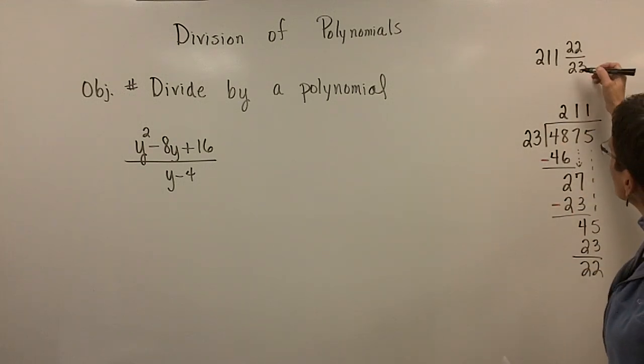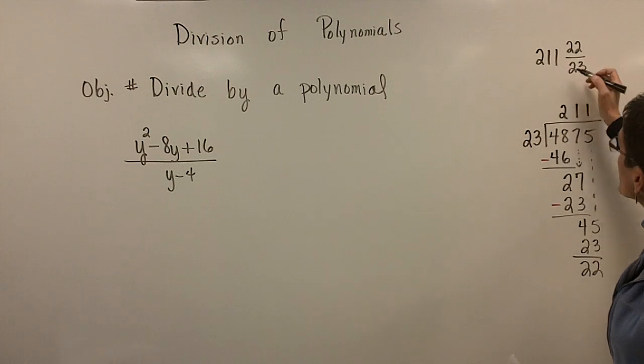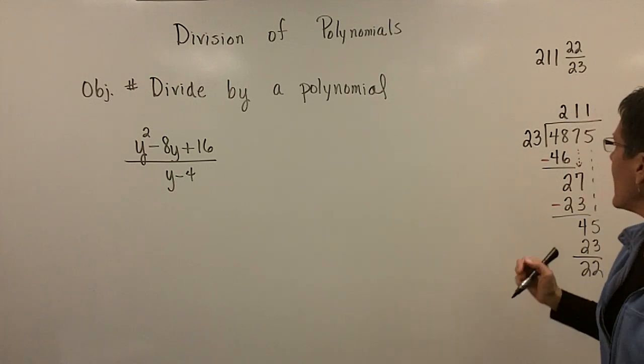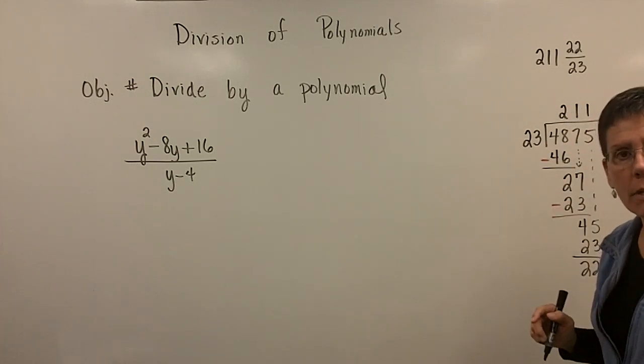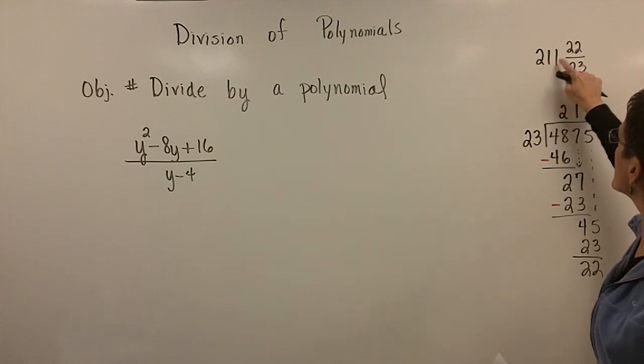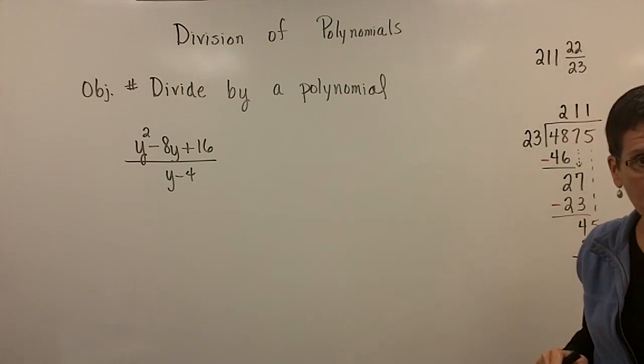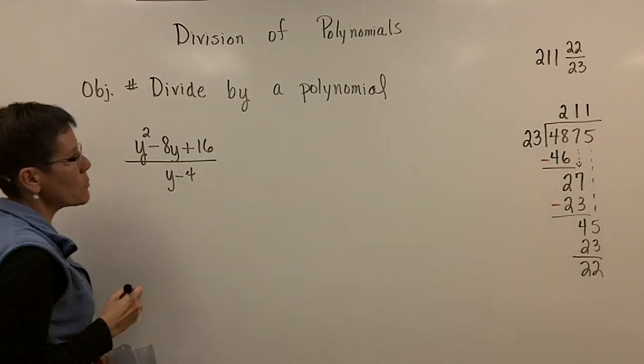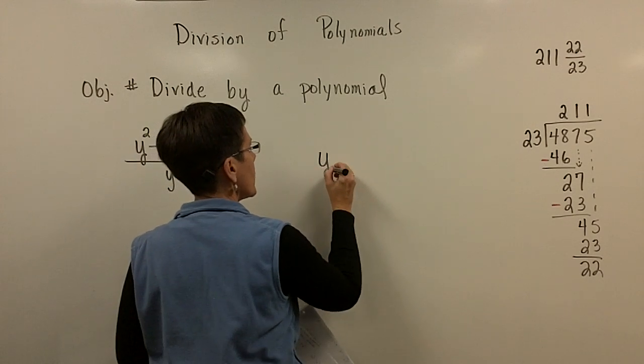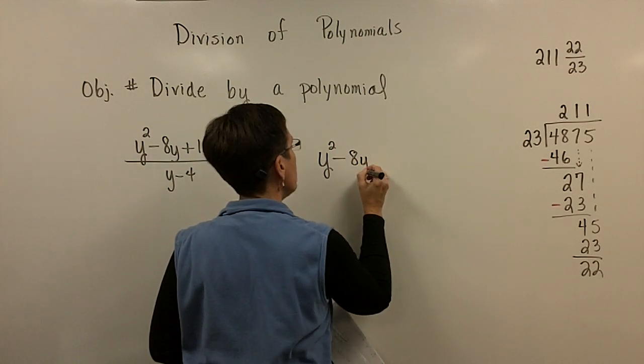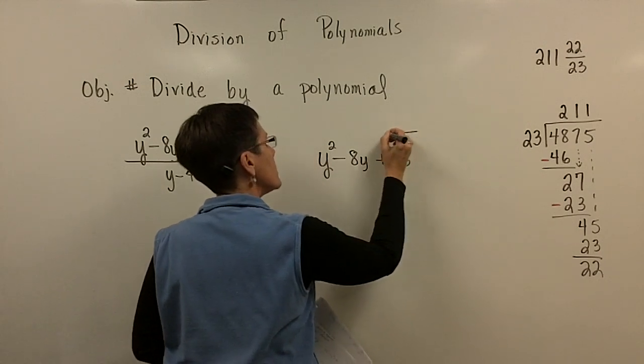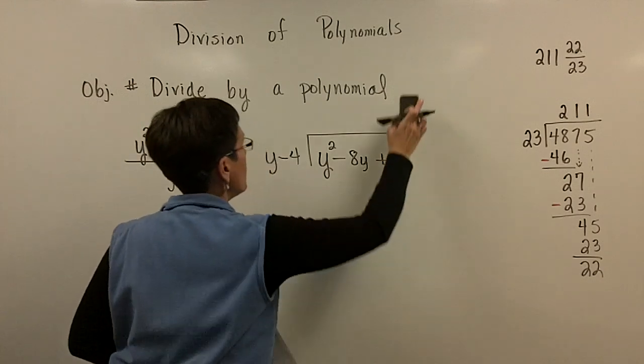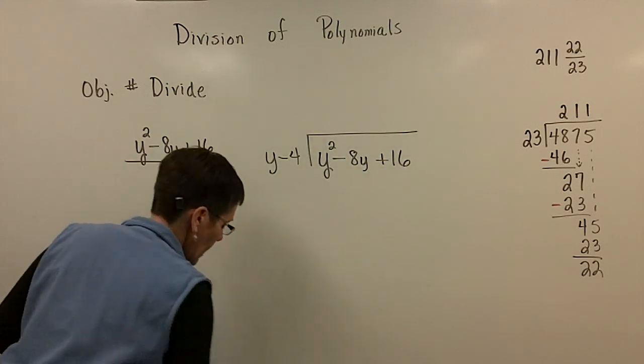Remember, you could take the 211 times 23 and add 22 to it to get it in improper form. And that would be the 4875 divided by the 23. So if this times this plus this gave you 4875, then you knew that you've done this correctly. Well, we're going to do this the same way. And we're going to set the y squared minus 8y, set this quotient up, and divide it by its divisor of y minus 4.